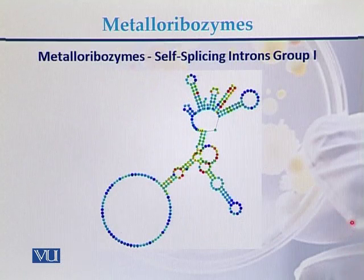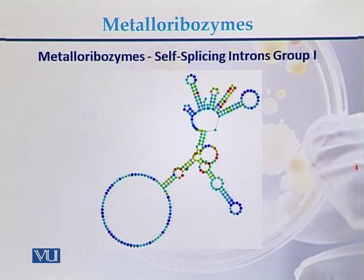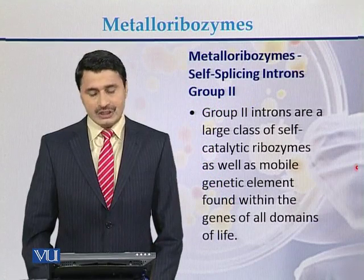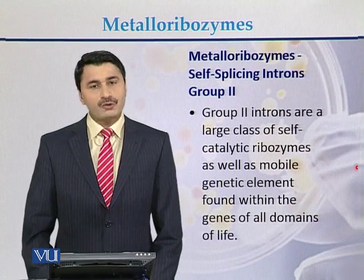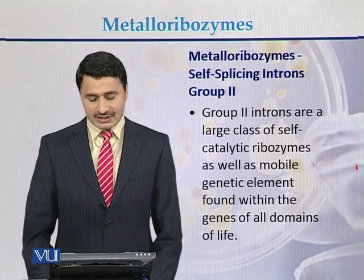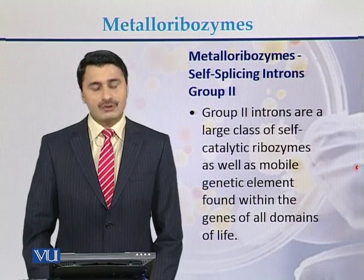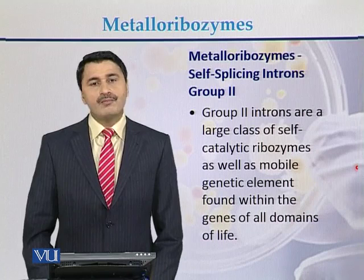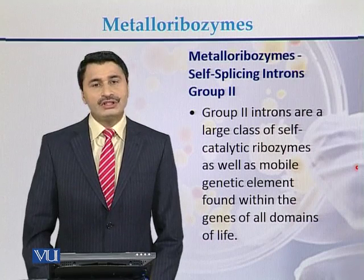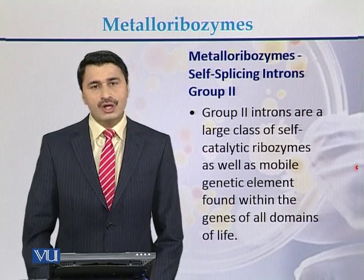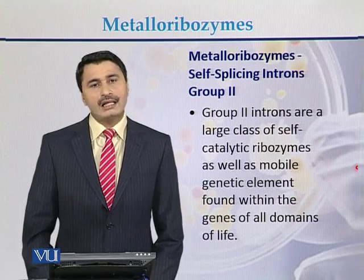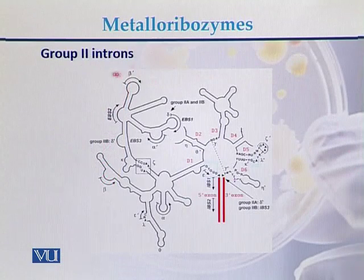Here is the diagram of a typical self-splicing intron group 1. In case of self-splicing intron group 2, group 2 introns are a large class of self-catalytic ribozymes as well as mobile genetic elements found within the genes of almost all domains of life. Here is the typical diagram of group 2 introns.